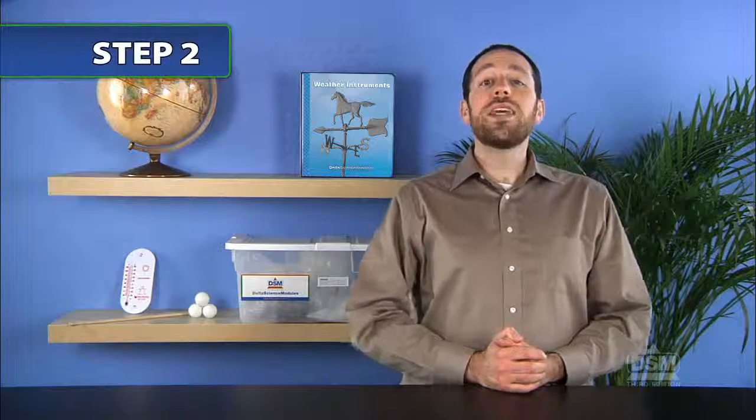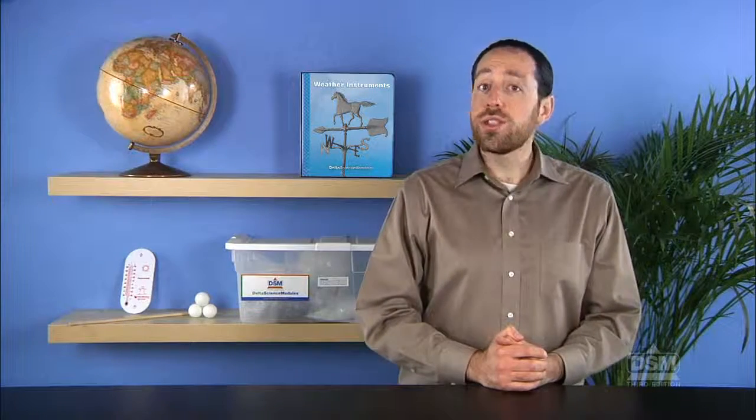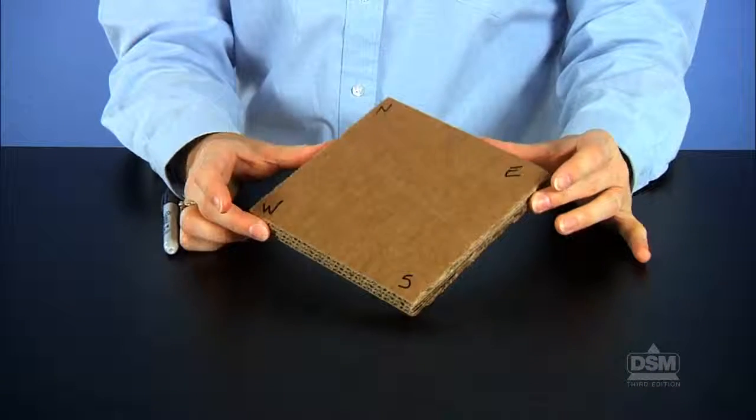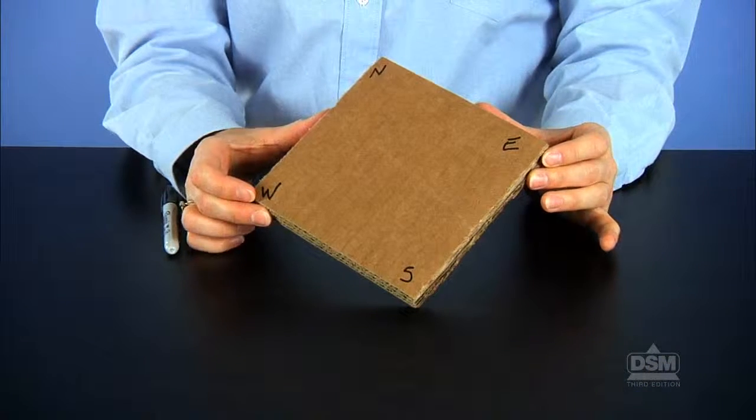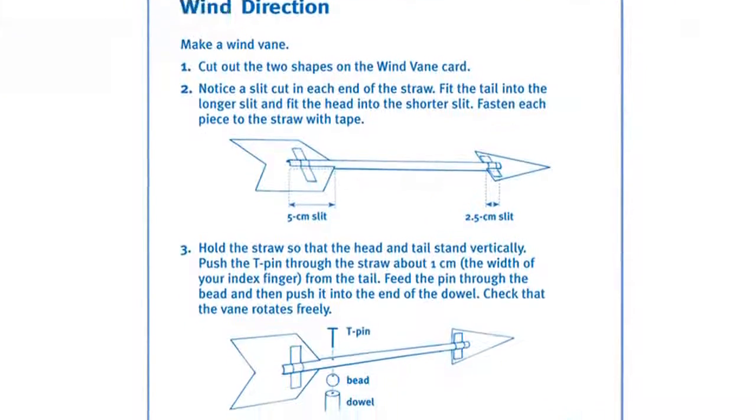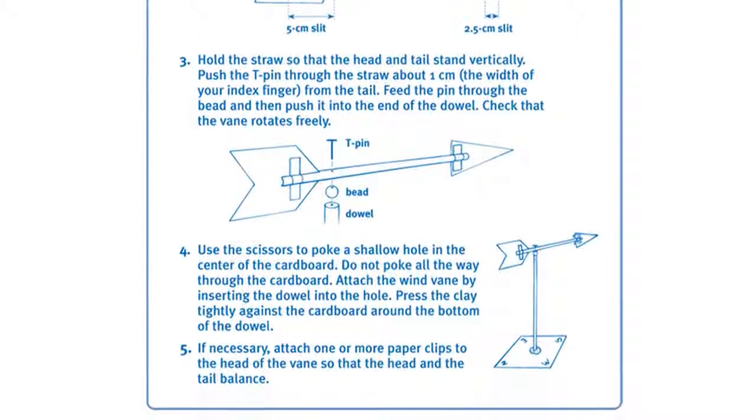Next, divide the class into teams of two and distribute the materials. Instruct the teams to mark the four compass points on one side of their piece of corrugated cardboard and have them write their names on the same side. Distribute Activity Sheet 4 and review each step, making sure that each team understands what the tasks are.